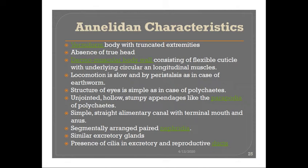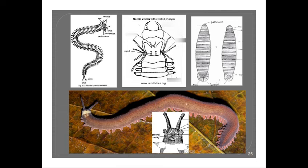Another important feature is the unjointed, hollow, stumpy appendages like parapodia. We have learned about parapodia in the case of Nereis, which help in locomotion as well as respiration. A similar kind of unsegmented appendage is present in Peripatus — the step foot is actually similar to the parapodia present in Nereis-like annelids.